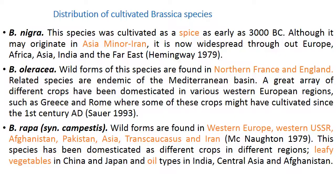Coming to distribution of cultivated Brassica species: Brassica nigra was cultivated as a spice as early as 3000 BC. Although it may have originated in Asia Minor and Iran, it is now widespread throughout Europe, Africa, Asia, India, and the Far East. Brassica oleracea — a wild form found in northern France and England — has related species endemic to the Mediterranean basin, with various crops domesticated in Western European regions like Greece and Rome since the first century.